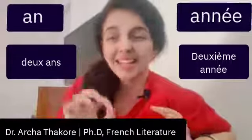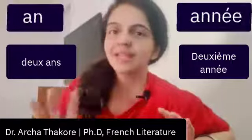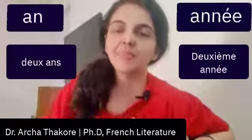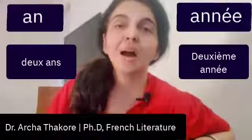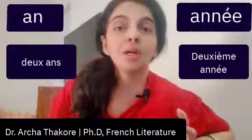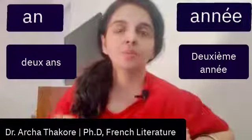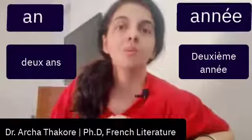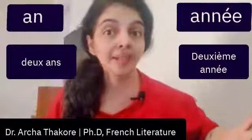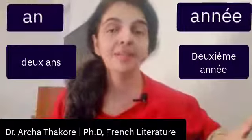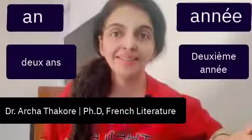There can be exceptions, but as I said, 90% of the time this rule works. For example: 'un an, deux ans, trois ans' — with cardinal numbers you use 'an.' 'Première année,' 'l'année dernière,' 'deuxième année' — with ordinal numbers you use 'année.'